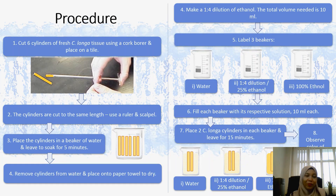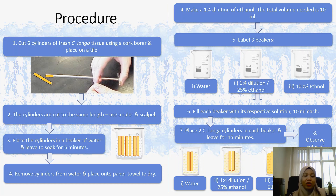For the procedures: first, you need to cut 6 cylinders of fresh kukumalonga using a cork borer and place them on the tile. Make sure that the cylinders are cut to the same length using a ruler and scalpel.